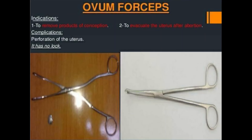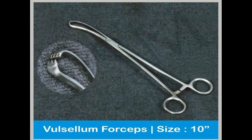Ovum forceps are also very important. They are used to remove the products of conception and to evacuate the uterus after abortion. A complication of using ovum forceps includes perforation of the uterus. Notably, ovum forceps have no lock.